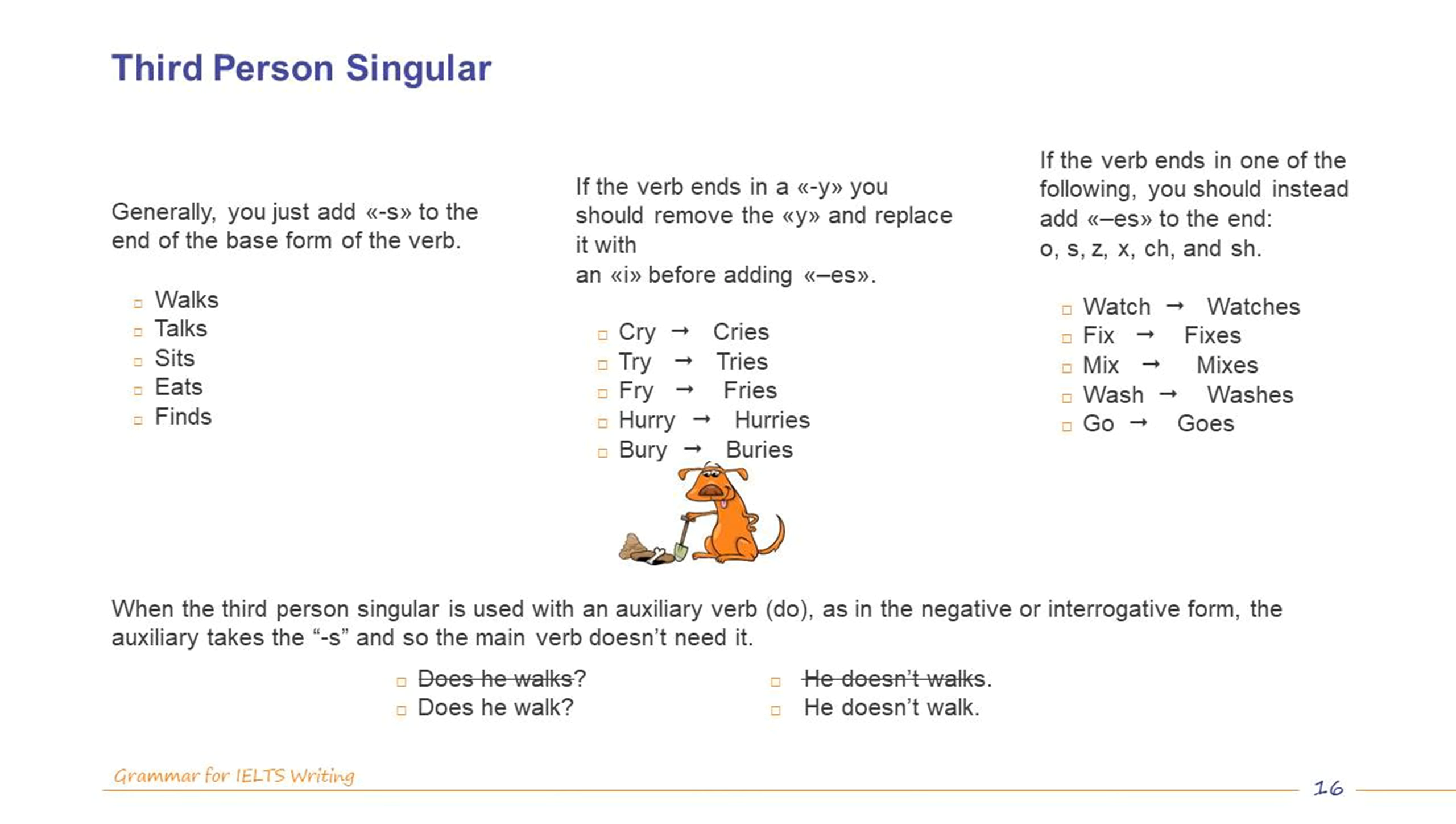When using the third person singular, meaning he, she, or it, you must add an S to the end of the verb. However, there are a few rules about that. Generally, you just add S to the end of the base form of the verb. If the verb ends in a Y, you should remove the Y and replace it with an I before adding ES. If the verb ends in one of the following, you should instead add ES to the end: O, S, Z, X, CH, and SH.